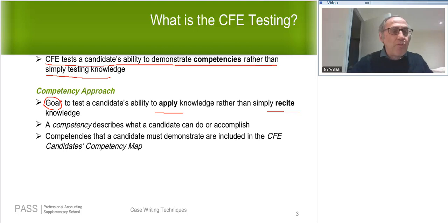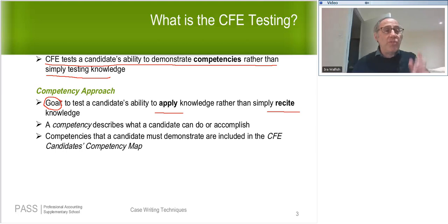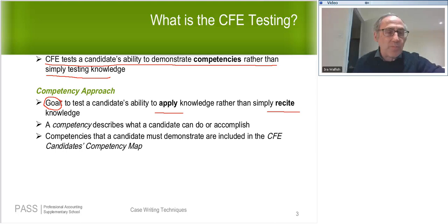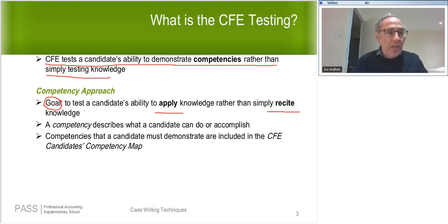A student asks whether the examinee has to write other roles beyond the selected one. On day two, you only choose one role. You still have to address financial accounting and/or management accounting — either one or both — as everyone does. But aside from that, you only address your chosen role. So if you chose assurance, aside from management accounting and financial accounting, you only deal with the assurance requires and do not have to worry about tax.